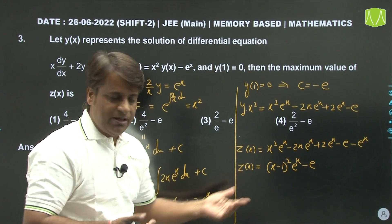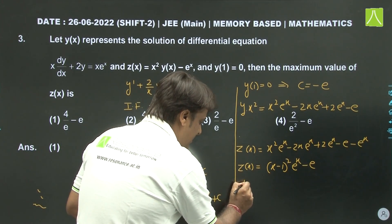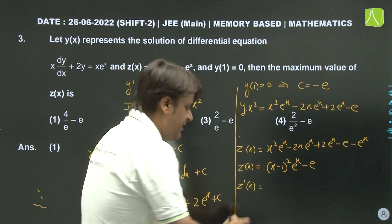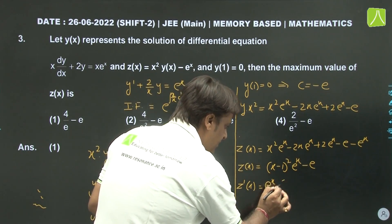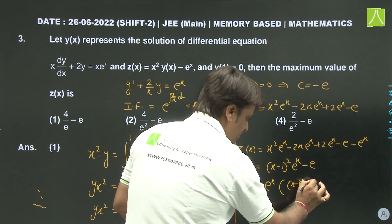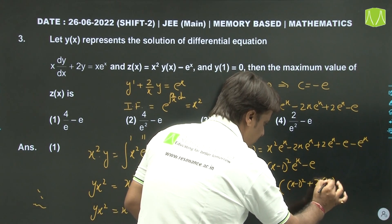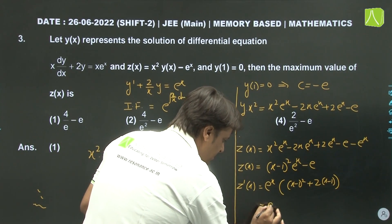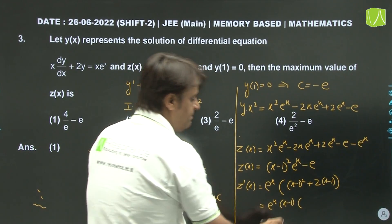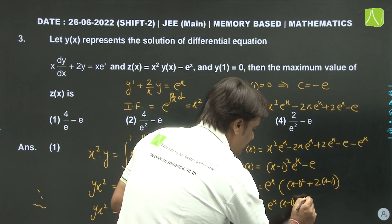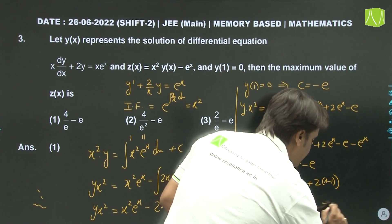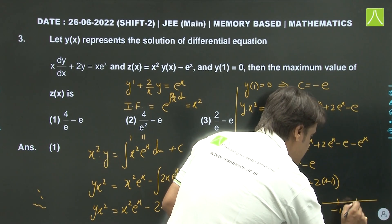To find the maximum value, we differentiate z(x). z'(x) = eˣ[(x-1)² + 2(x-1)] = eˣ(x-1)(x+1). So the critical points are x = -1 and x = 1. Sign analysis gives: plus-minus-plus pattern, so maxima is at x = -1.